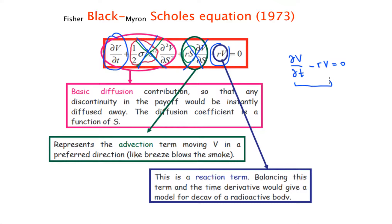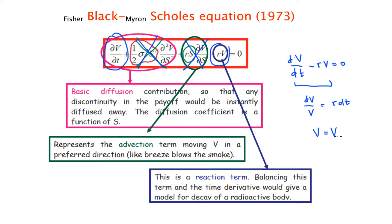The reaction-term-only equation can actually be solved exactly, because the partial derivative becomes essentially an ordinary derivative in time. You bring everything depending on V to one side and everything depending on t to the other, integrate, and find that the option value is the initial option value times an exponential factor — specifically e^(r·t) — which represents the discounting of the option price as a function of time.